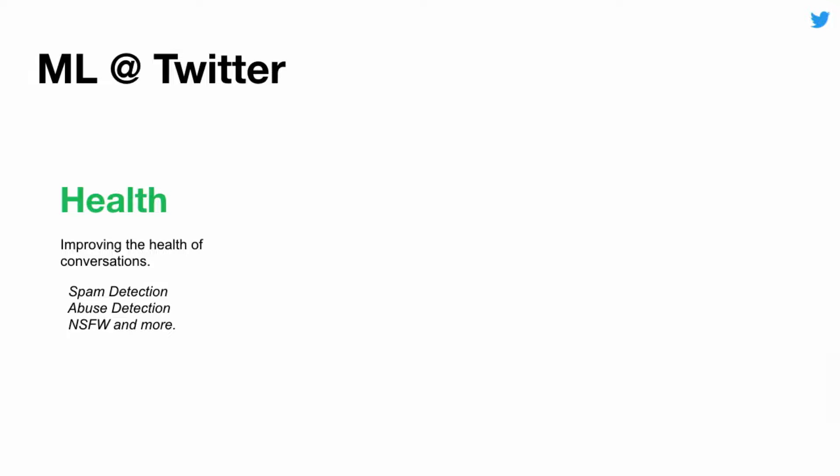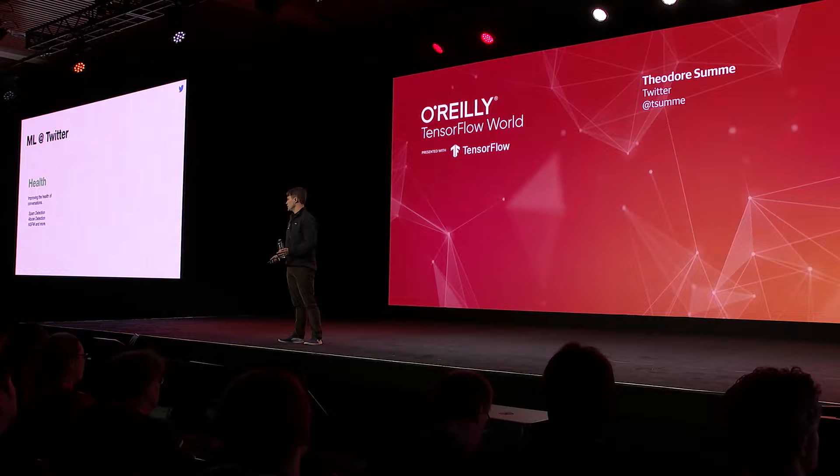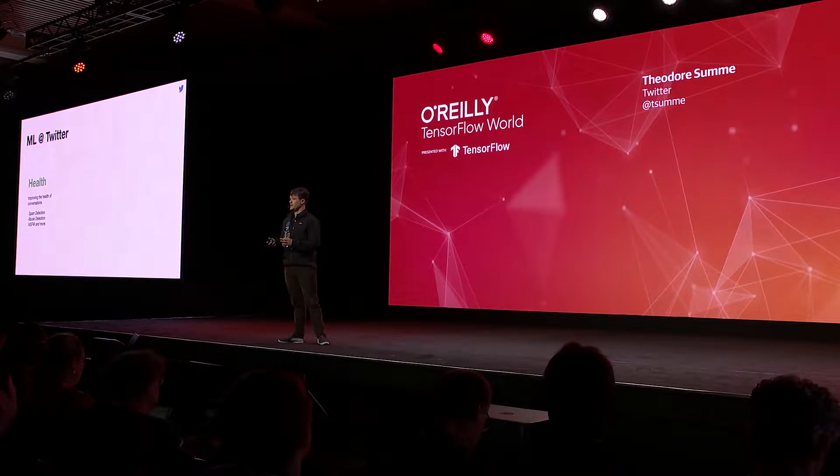A third space where we're using machine learning is something called NSFW — not safe for work. How can we, at scale, identify this content and handle it accordingly? Another use of machine learning in this space. There's more that we want to do here, and there's more that we're already doing.